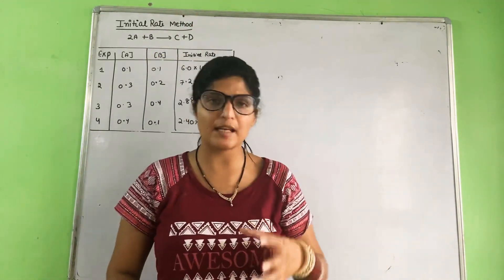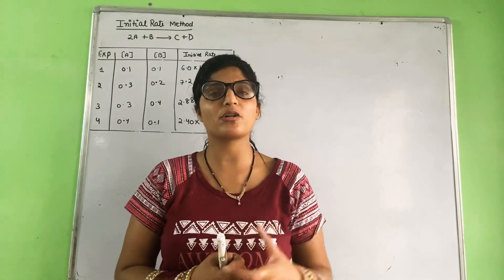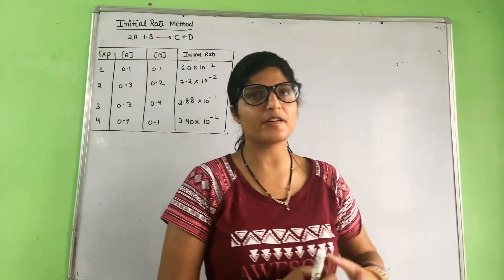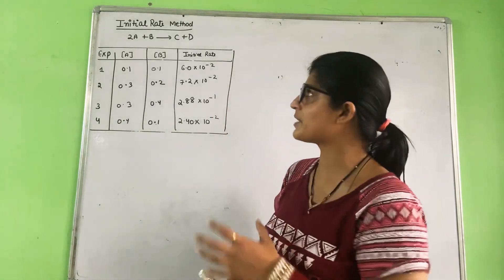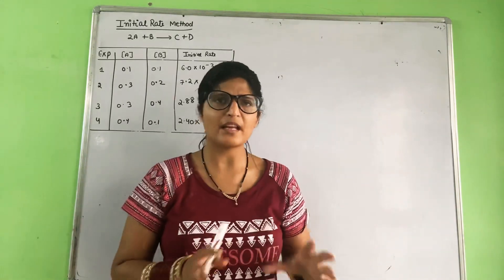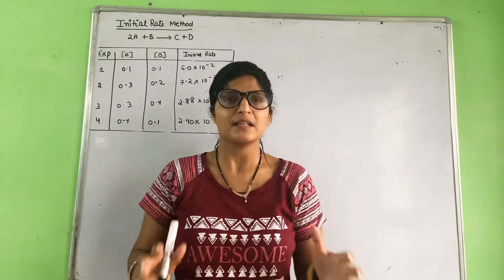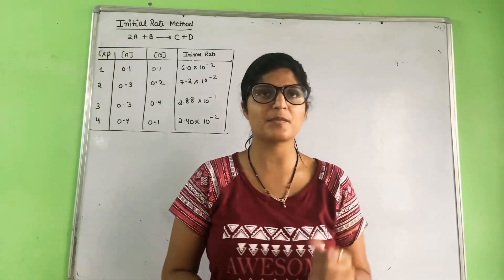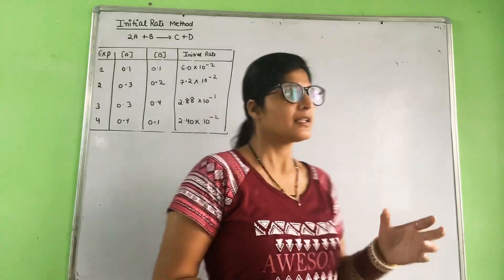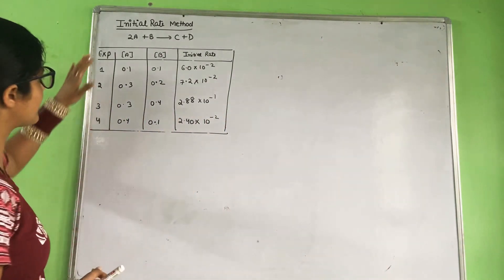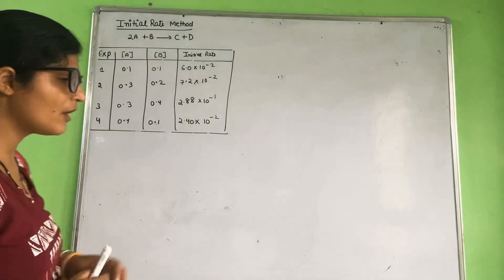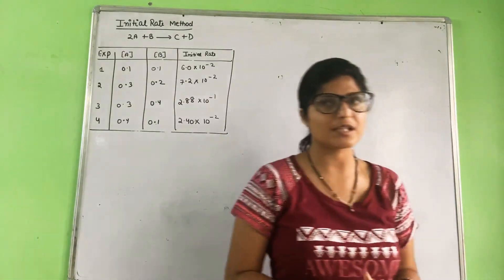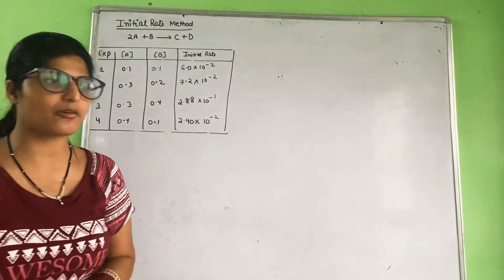The initial rate method is used to determine the order of a reaction. The first method is the integrated rate law equation. The second method is the initial rate law method, which is used to determine the rate law and rate constant.